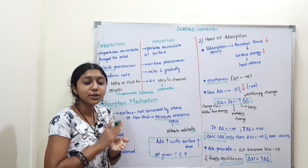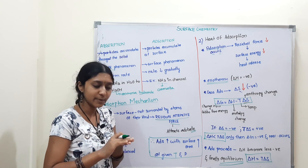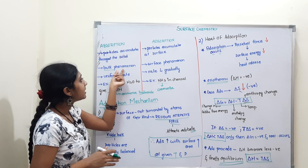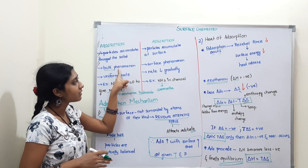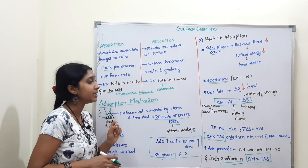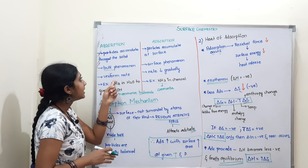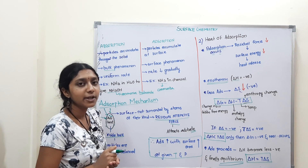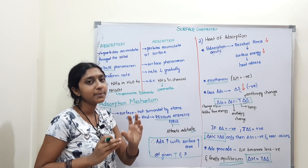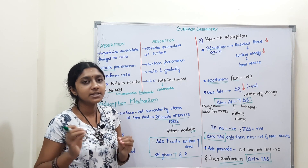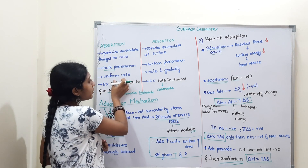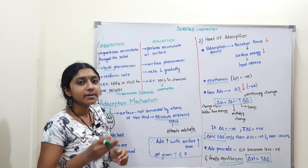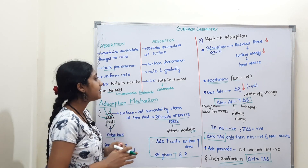In adsorption, particles accumulate only on the surface. If particles are above the surface, they go onto the surface. Absorption is a bulk phenomenon, whereas adsorption is a surface phenomenon. In absorption, the rate is uniform — for example, a sponge absorbs water uniformly. In adsorption, the rate gradually decreases over time.